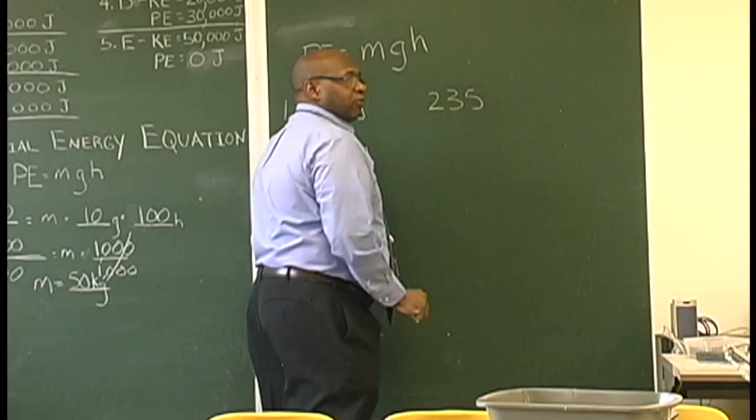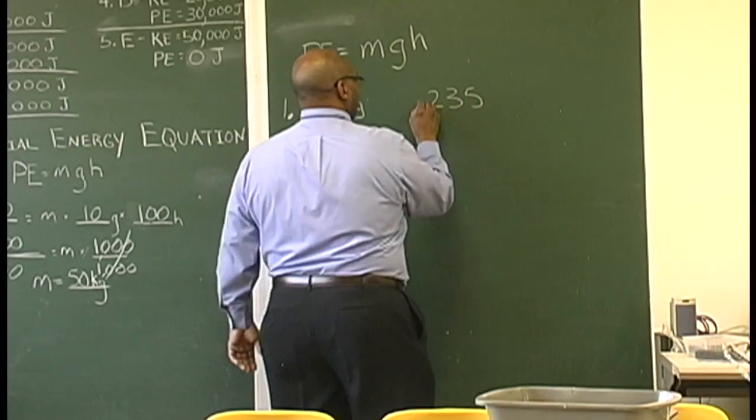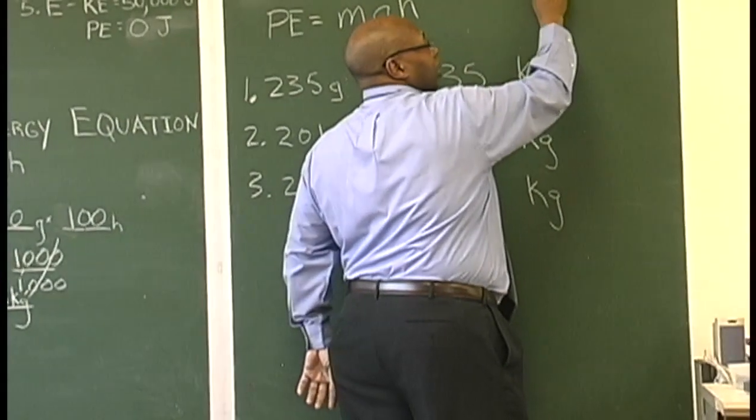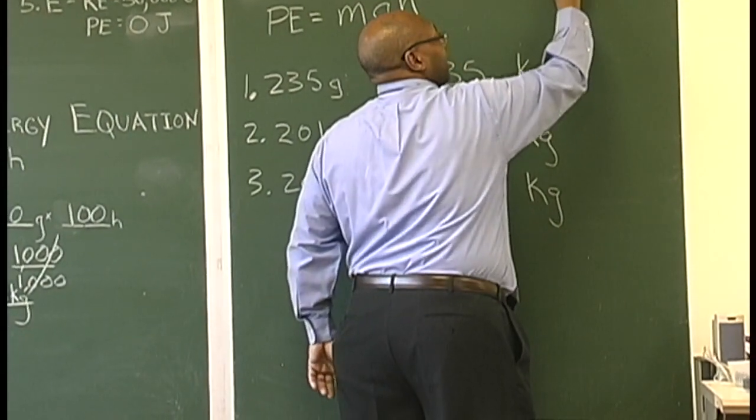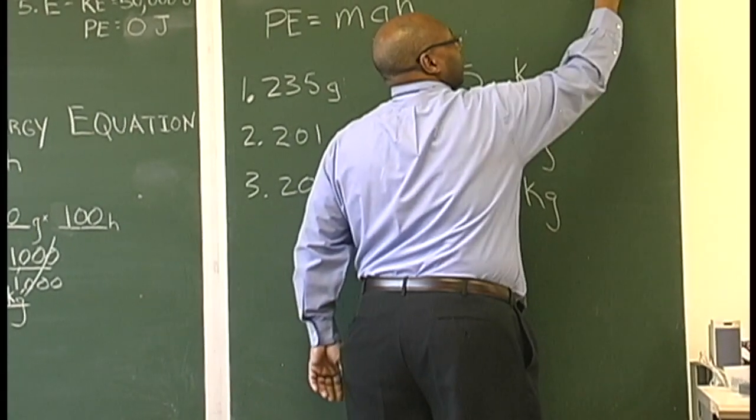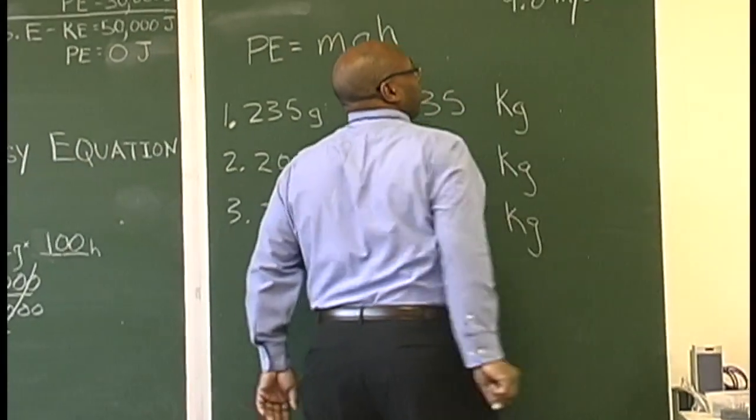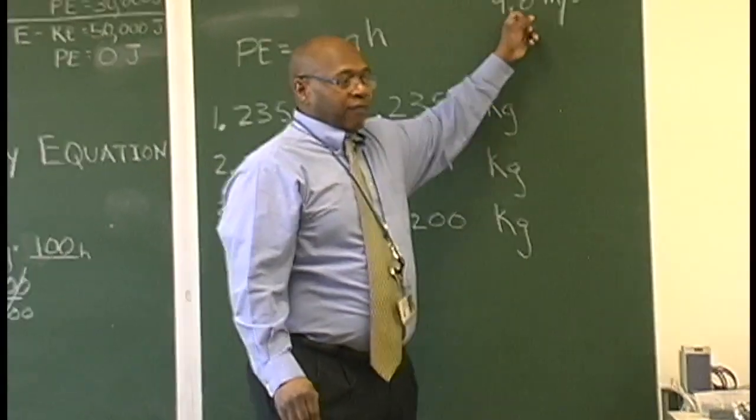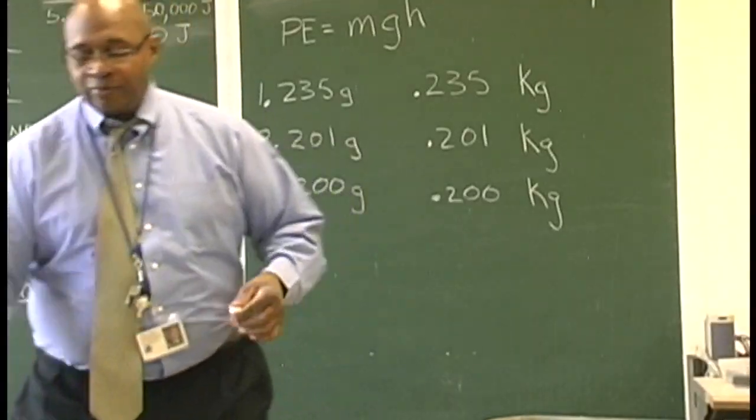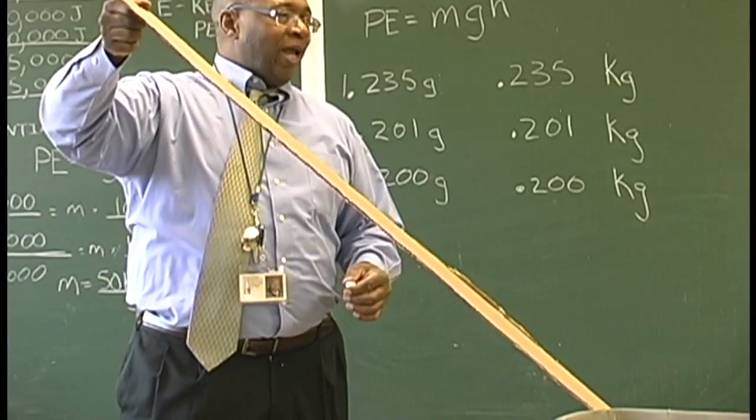We have 0.25 kilograms. 9.8 meters per second squared - this is Earth's gravitational force. The height is going to be based on the slope of the ramp.